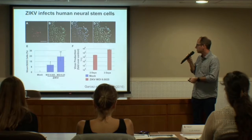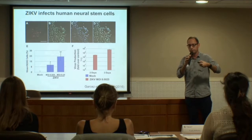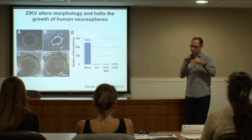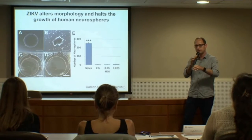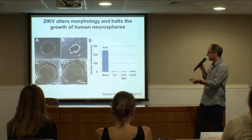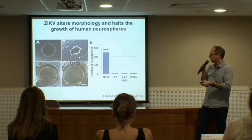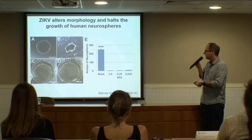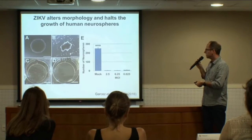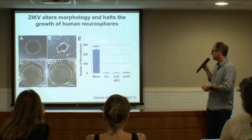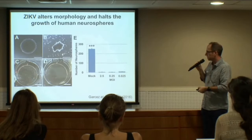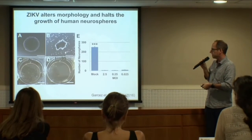We showed that the virus is able to replicate inside these neural stem cells. Since we knew there was something more than just killing the cells, we were interested to see what would happen to the morphology of the neurospheres. In image A, you see a healthy neurosphere without Zika; in B, a neurosphere with Zika three to four days after infection. After seven days, there are basically no more neurospheres. This shows the neurospheres forming without the virus versus with the virus.